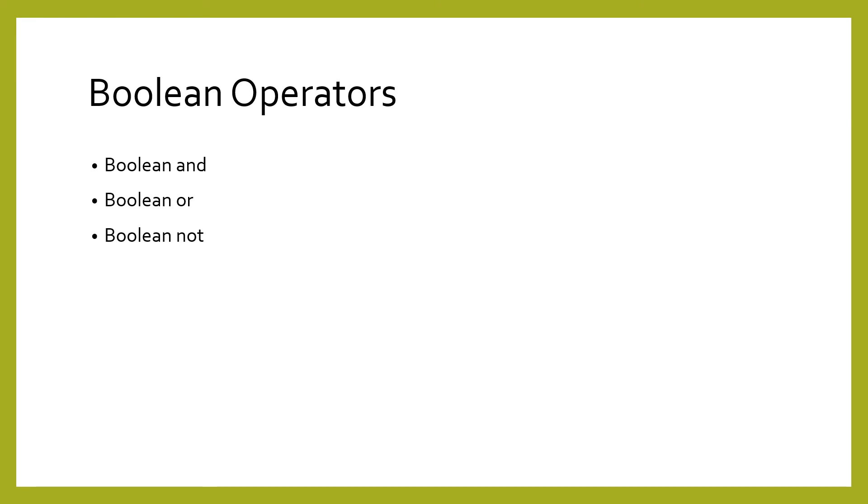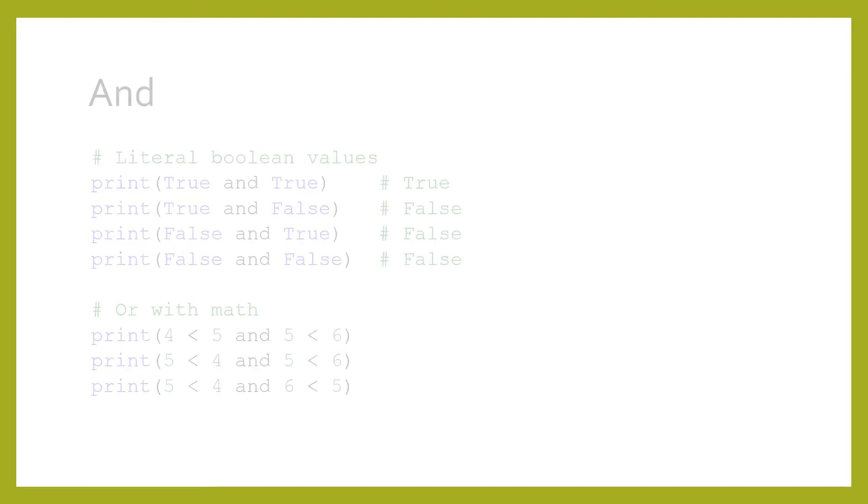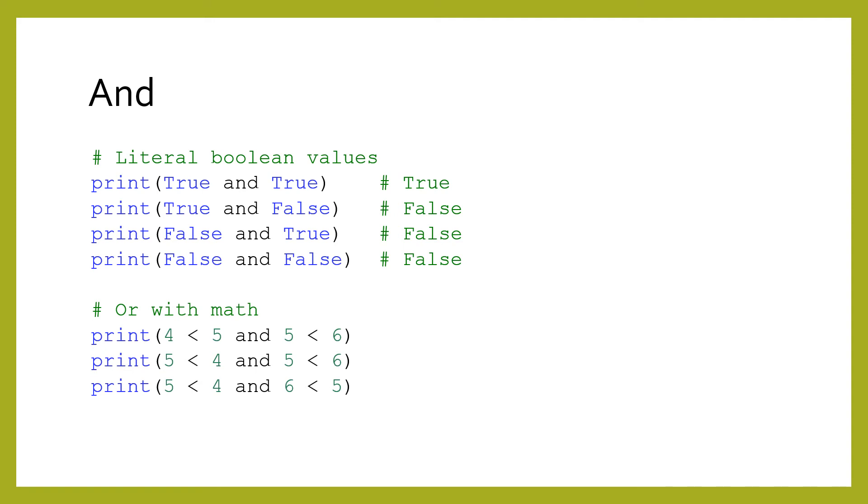In the same way we can add and subtract numeric expressions together, we can also combine boolean expressions together. There are three operators for this, and, or, and not. The and operator returns true if both the left and right operands are true. If either operand is false, then the result is false too. Notice in the second chunk of code, we are combining the and operator with mathematical comparisons.